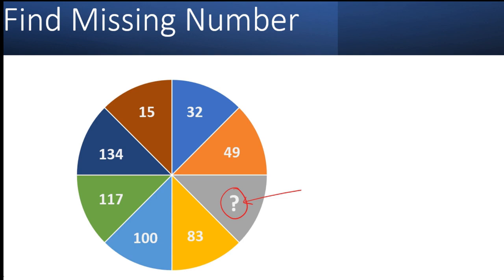Hopefully you would have figured the answer, but if not, let's see. Let's start with this 15. If you see 15 and the alternate value, we are skipping one value. Then the difference is 49 minus 15 is 34.